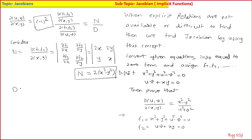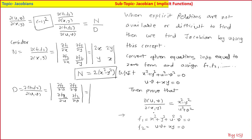Now consider the denominator D = ∂(f1,f2)/∂(u,v). That is the determinant [∂f1/∂u, ∂f1/∂v; ∂f2/∂u, ∂f2/∂v]. ∂f1/∂u = 2u, ∂f1/∂v = −2v, ∂f2/∂u = v, ∂f2/∂v = u. So D = 2u² − (−2v²) = 2u² + 2v² = 2(u² + v²).